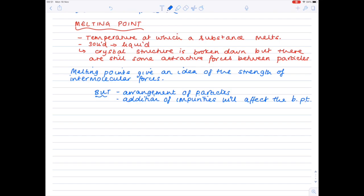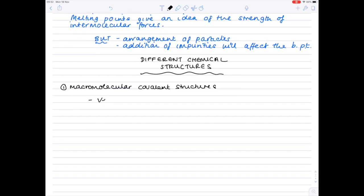Now we're going to compare various structures so starting with giant covalent structures which we now describe as being macromolecular. These have very high melting and boiling points.